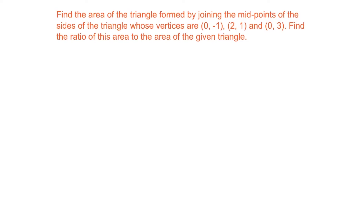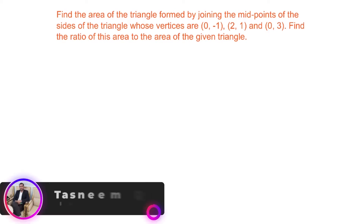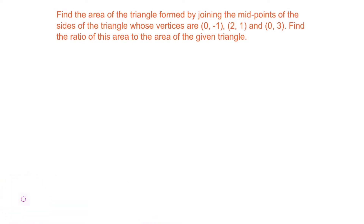Find the area of the triangle formed by joining the midpoints of the sides of the triangle whose vertices are (0, -1), (2, 1), and (0, 3). Also find the ratio of this area to the area of the given triangle.